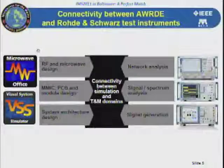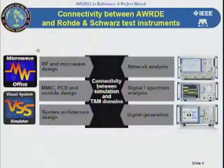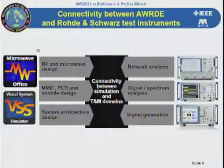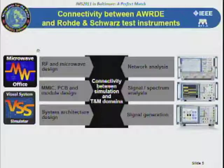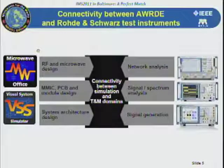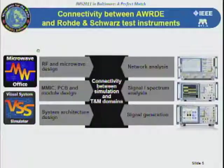The AWR design environment consists of Microwave Office and Visual System Simulator. We can connect Microwave Office to instrumentation such as a network analyzer. The RF microwave designer would use that to extract large-signal or small-signal S-parameters and drop them into the circuit simulation tool. We can connect instrumentation to realize the impact of an MMIC or a PC board and bring that into the environment.